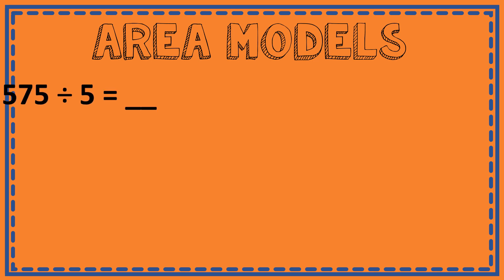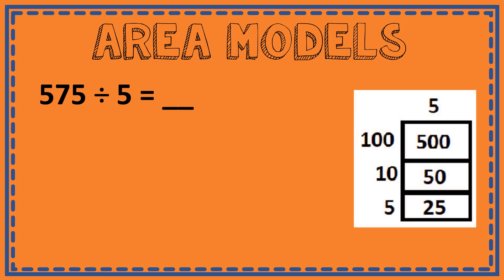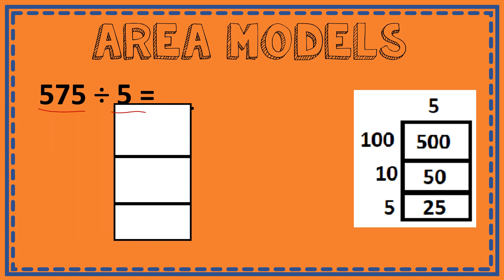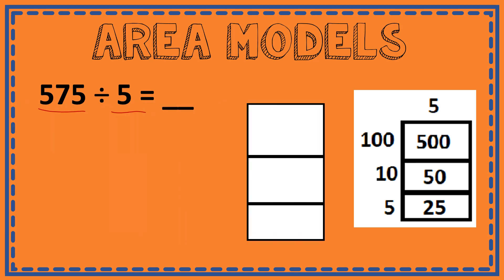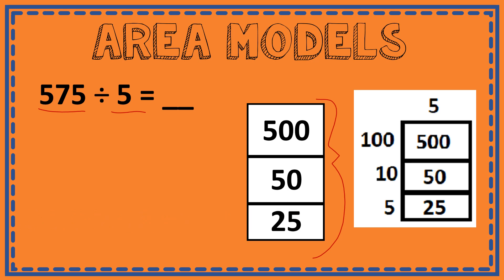So let's talk about division and using area models. Here's an equation: 575 divided by 5. I'm going to show you an area model that would fit this equation. This area model splits the equation into parts — there are three main parts, and this is your dividend. This equals your 575, and as you can see, 575 has been split into 550 and 25.